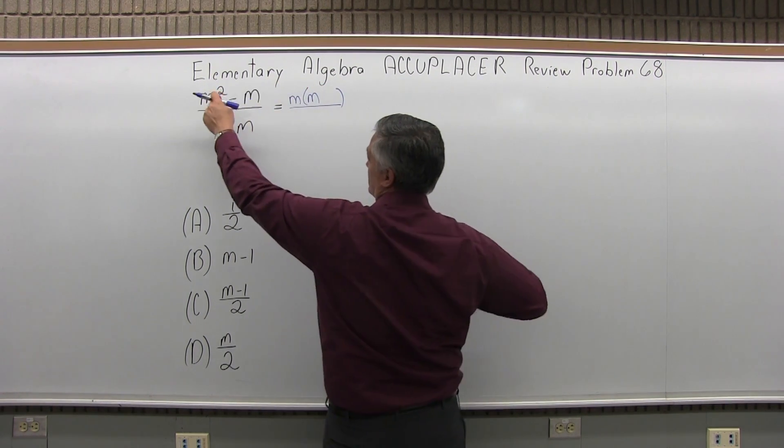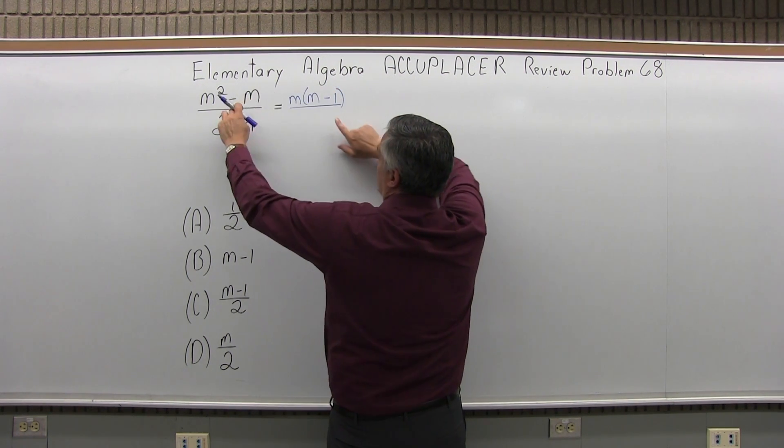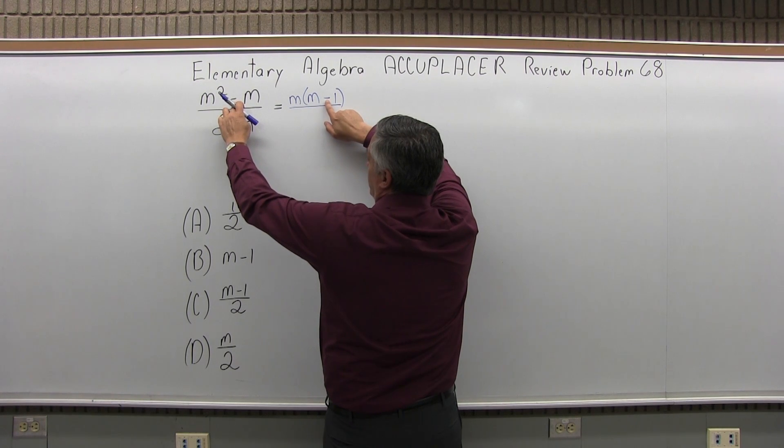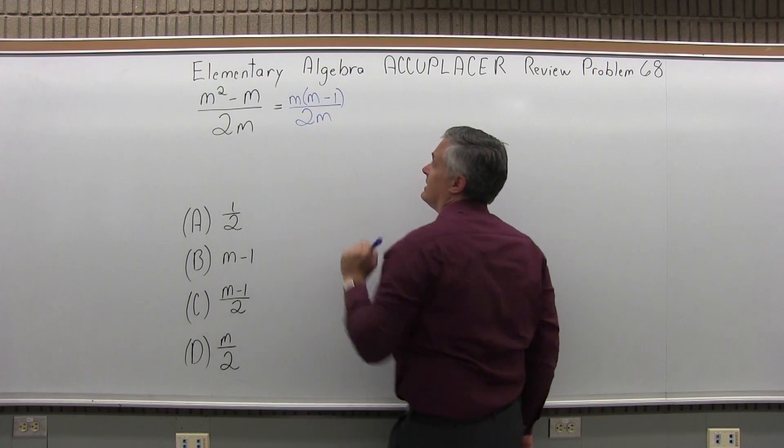So m times something gives me my m squared. Well, m times m is m squared. Then m times something is minus m. It'd be times minus 1, right? Pay attention to the sign. It's a minus. m times minus 1 is minus m.